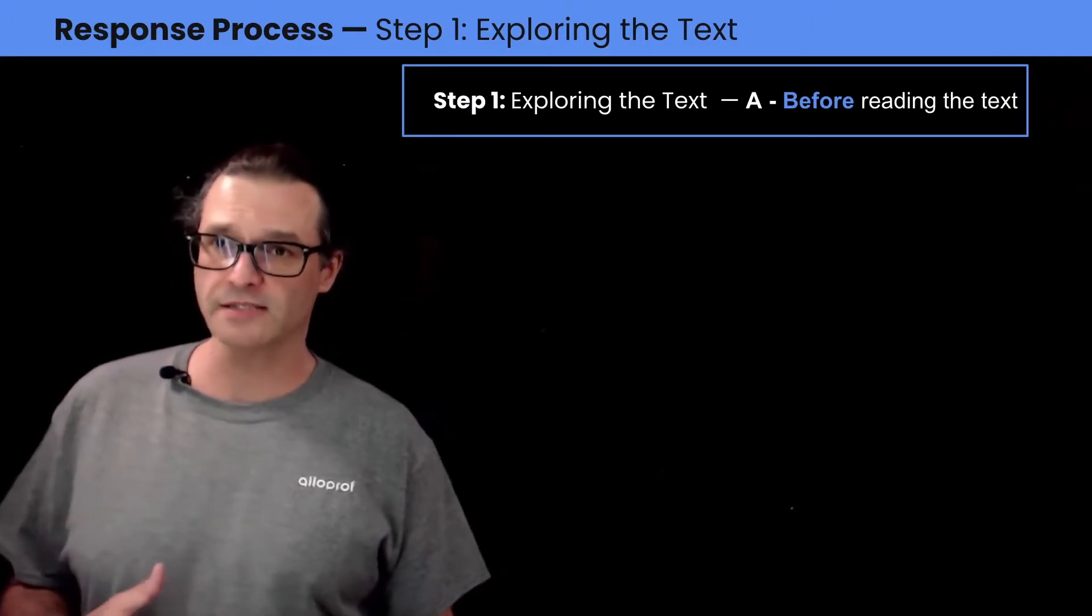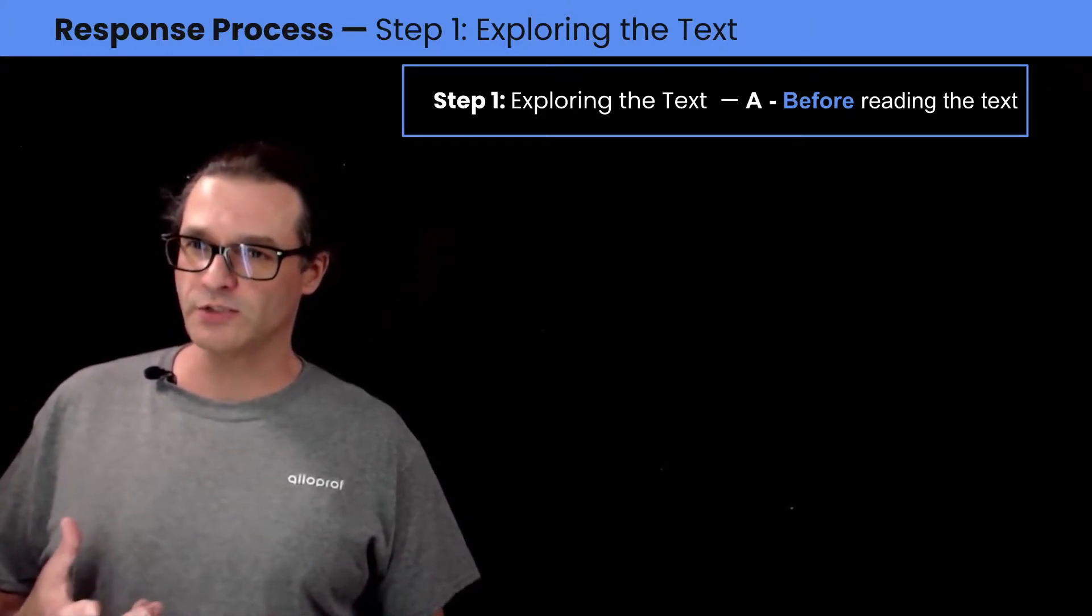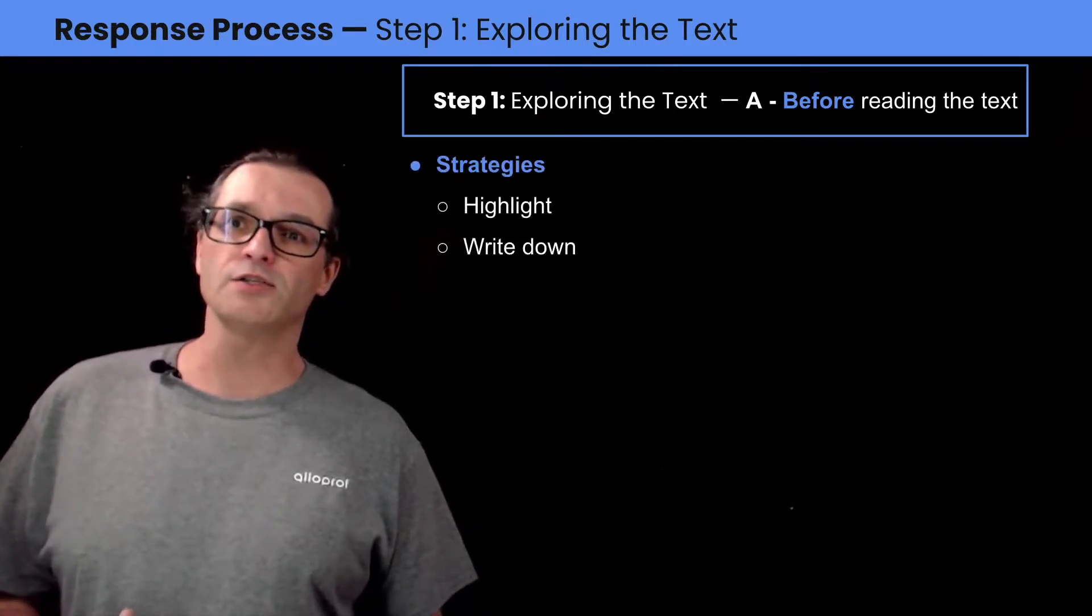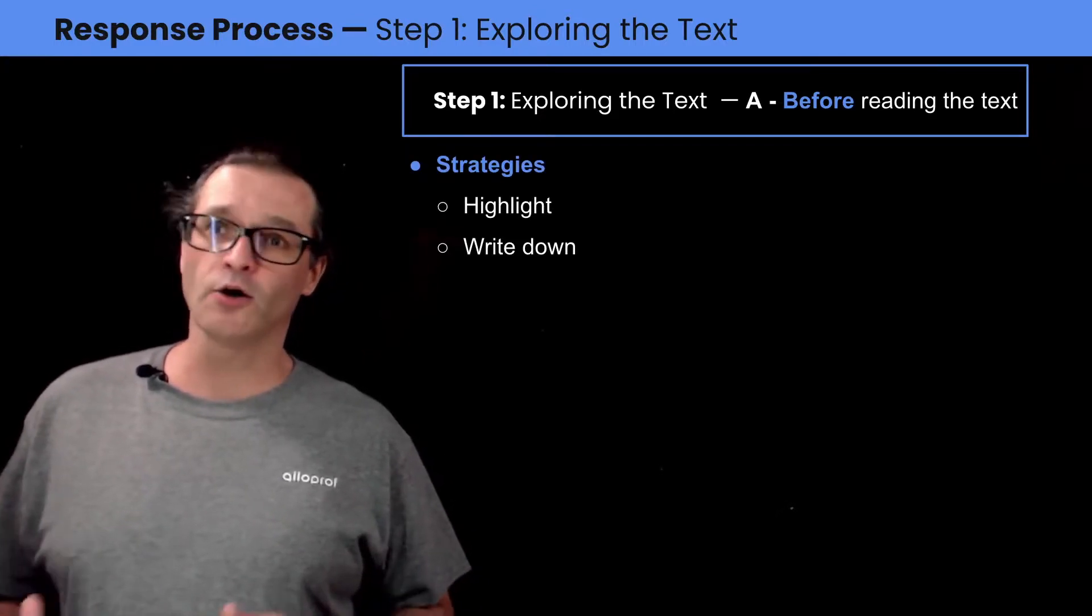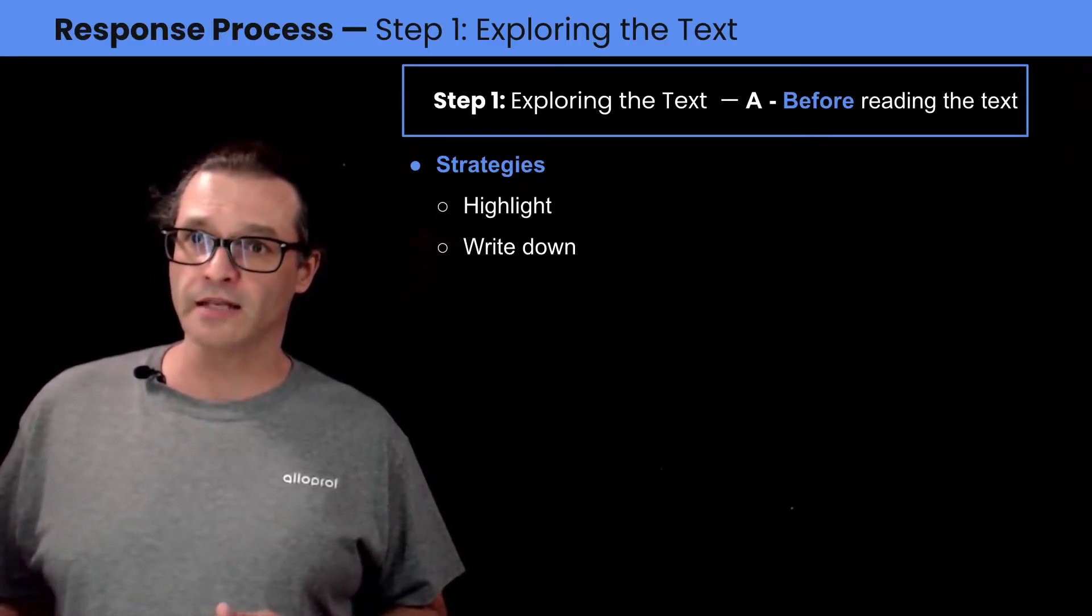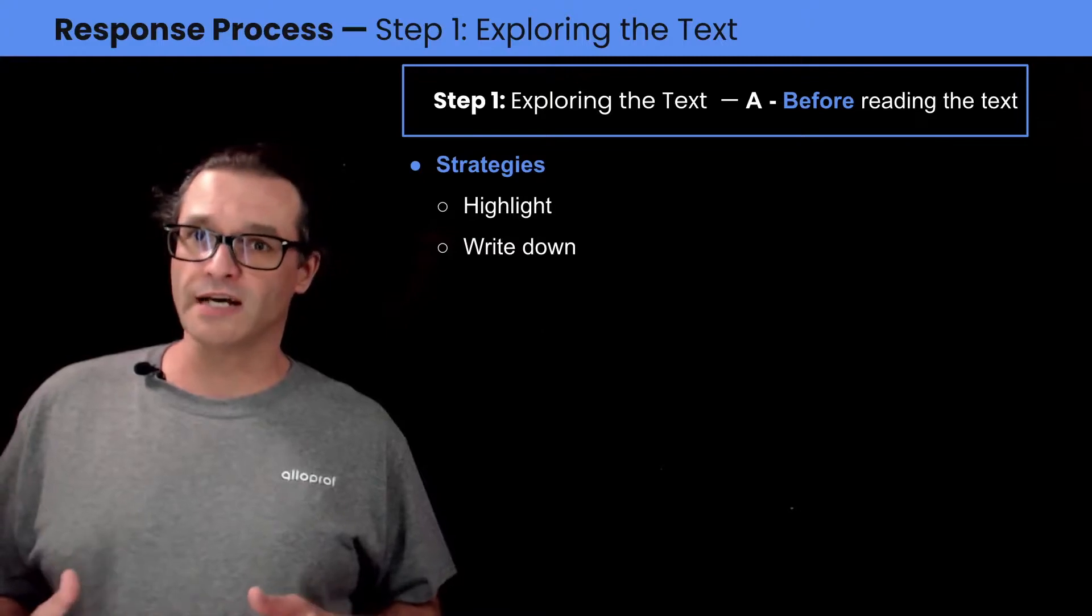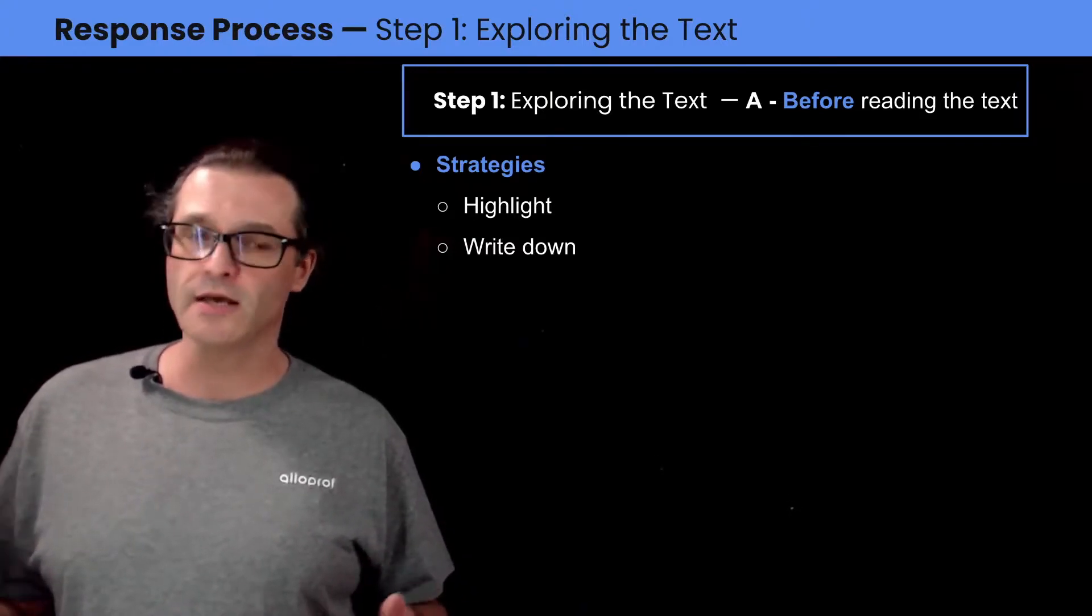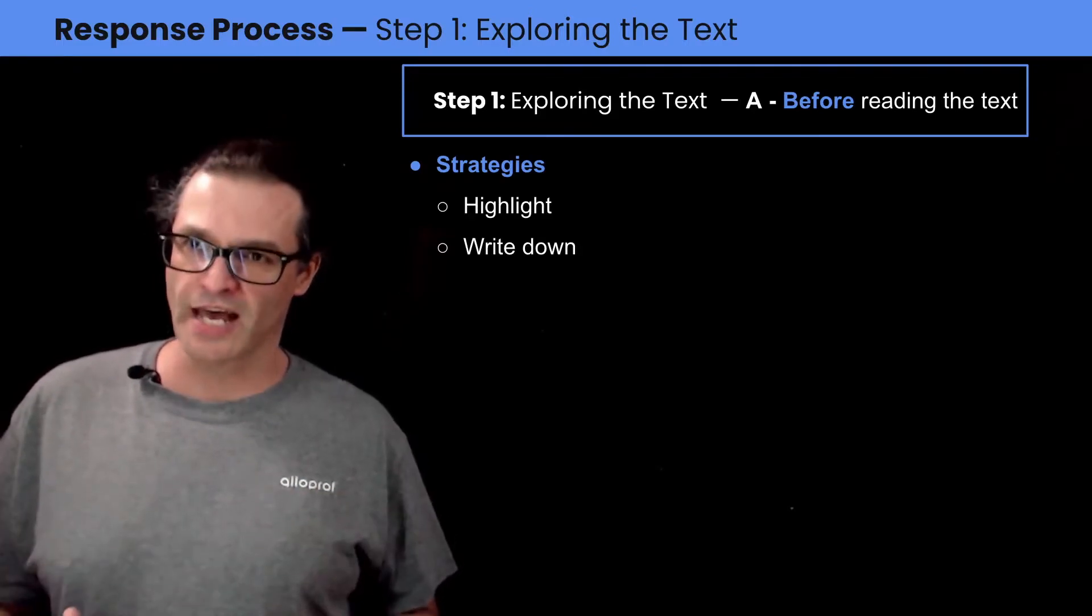Also, before reading the text, it would be important to think of the strategies you could use and the resources available to you. Strategies like highlighting or writing down. You could highlight important parts of the text and interesting ideas. You could write down any ideas that you get while you are reading the text, any questions you get, or any reactions you have to the text.